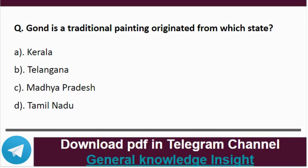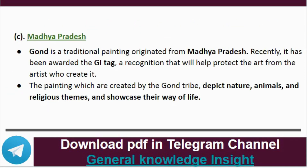Question 4: Gond is a traditional painting originated from which state? The correct answer is option C, that is Madhya Pradesh. Gond is a traditional painting originated from Madhya Pradesh. Recently it has been awarded the Geographical Indication tag, a recognition that will help protect the art. Gond paintings are created by the Gond tribe and depict nature, animals and religious themes, showcasing their way of life.